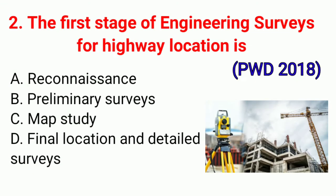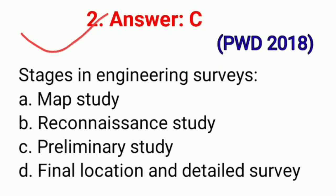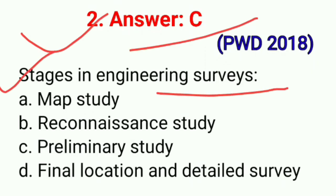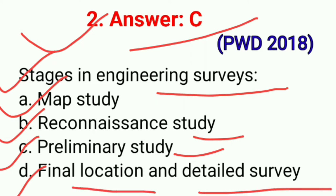Question No. 2. The first stage of engineering surveys for highway location is. This question is asked in exam PWD 2018. The correct answer is option C: Map Study. Stages in engineering surveys: first, Map Study; second, Reconnaissance study; third, Preliminary study; last, Final location and detailed survey. So correct option C.